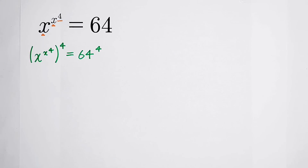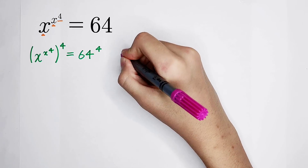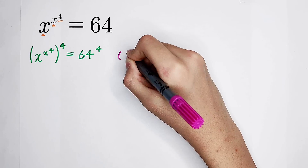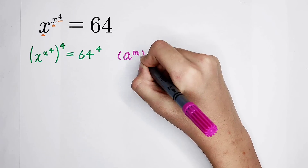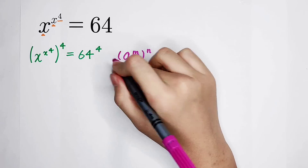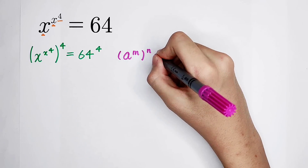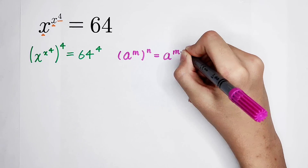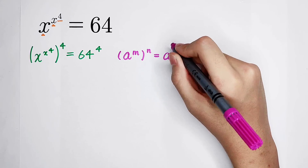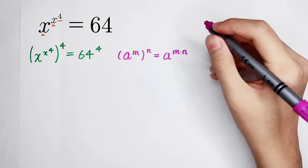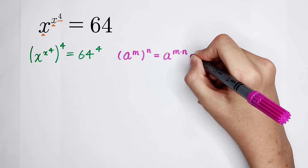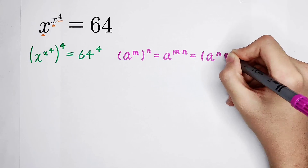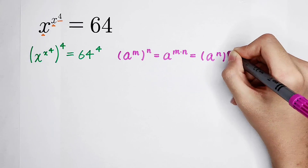Now I'm going to use a formula. That is: h to the power of m, bracket all to the power of n, is equal to h to the power of m times n — the exponent becomes m times n. And it is also equal to h to the power of n, bracket all to the power of m.